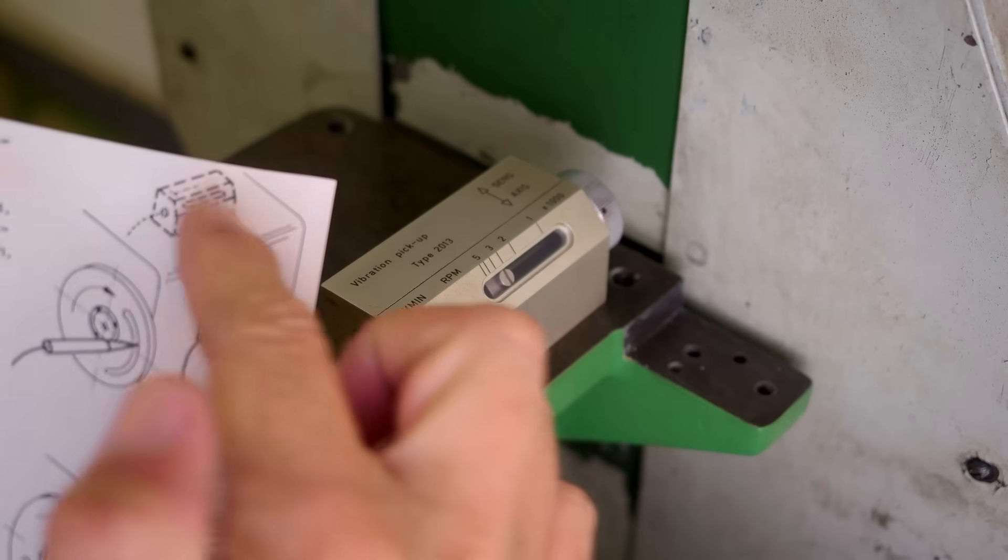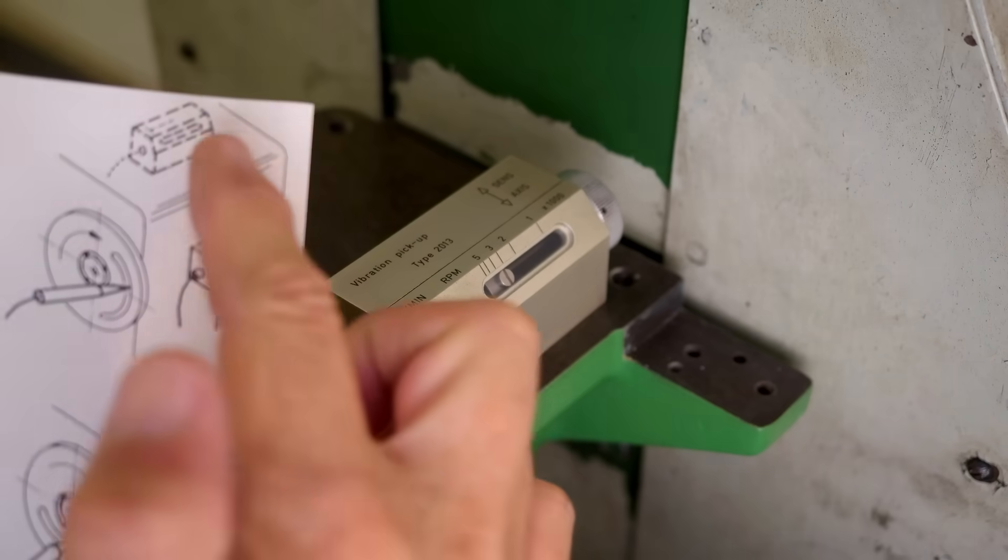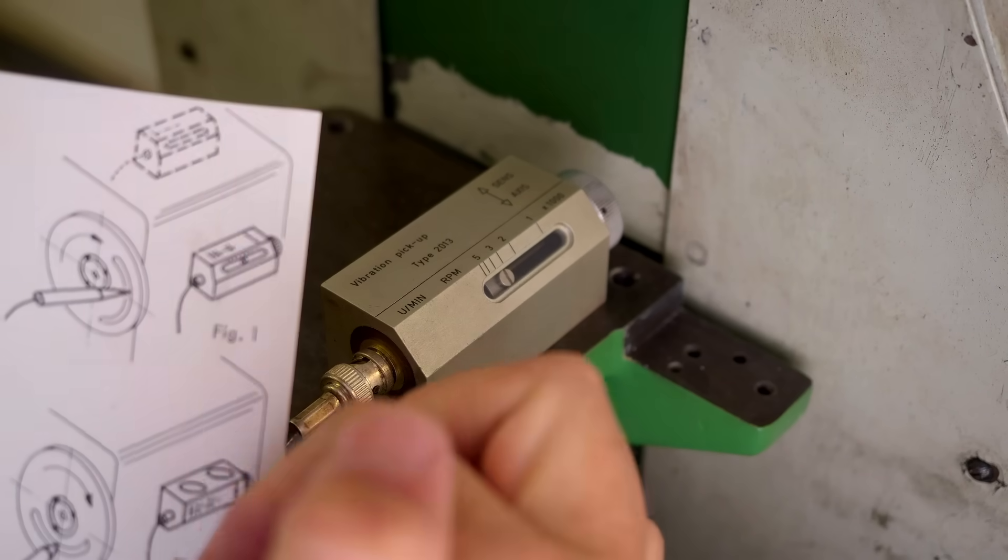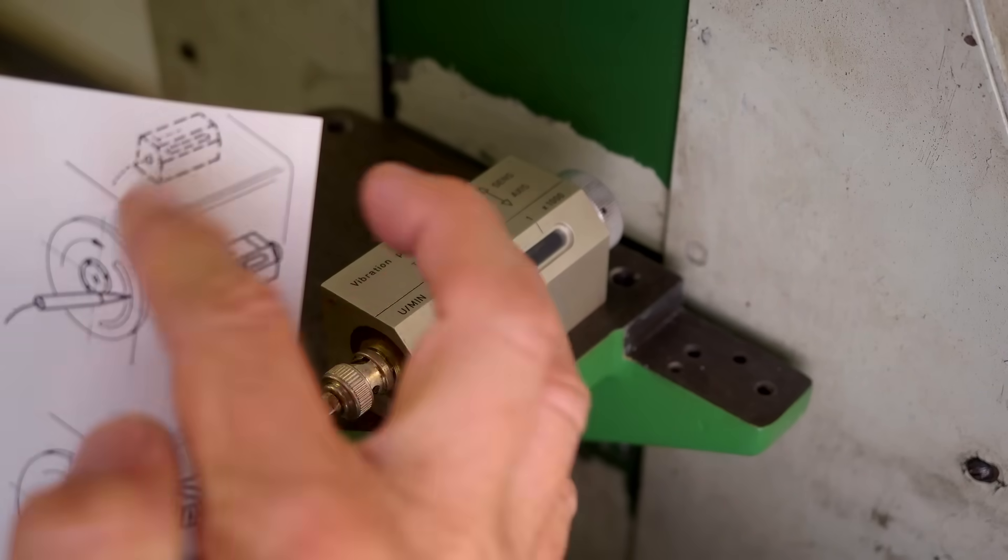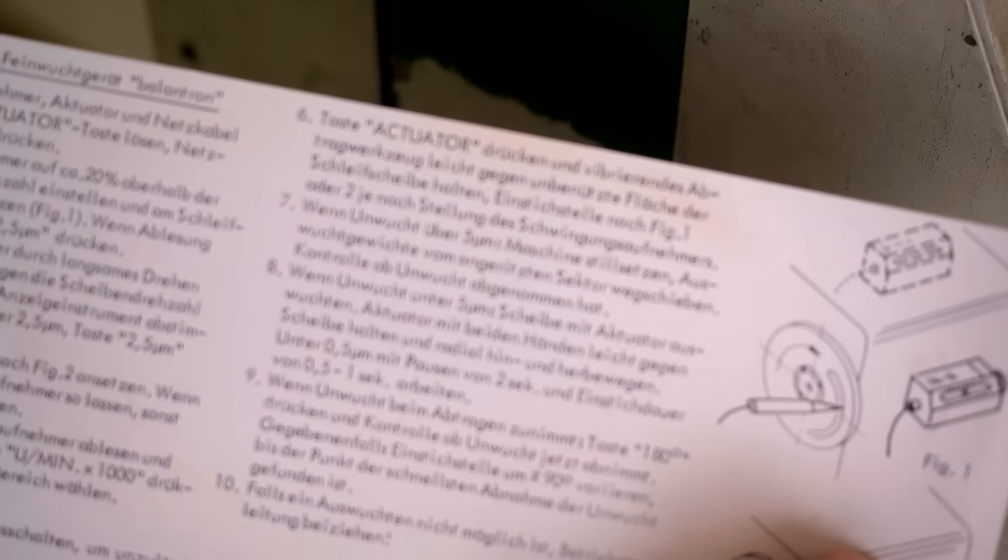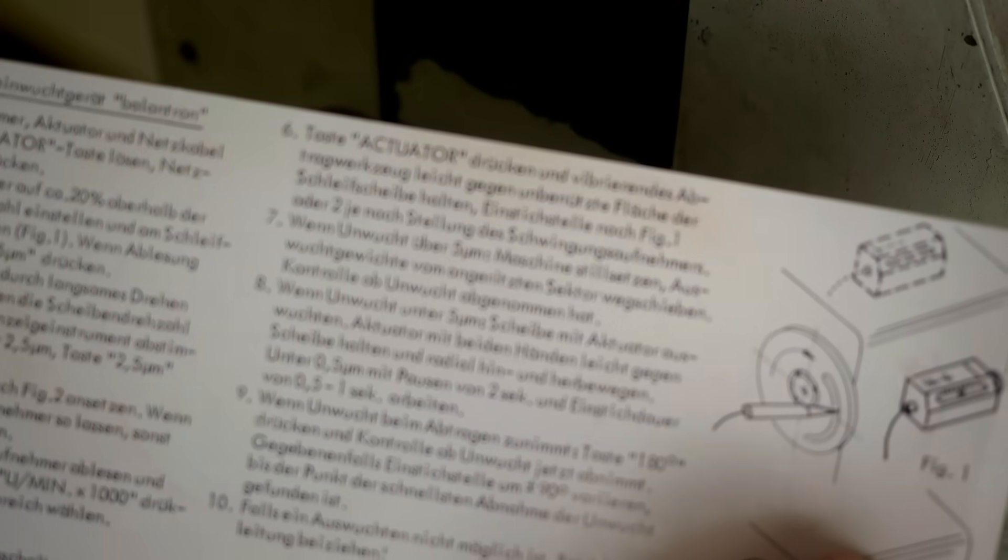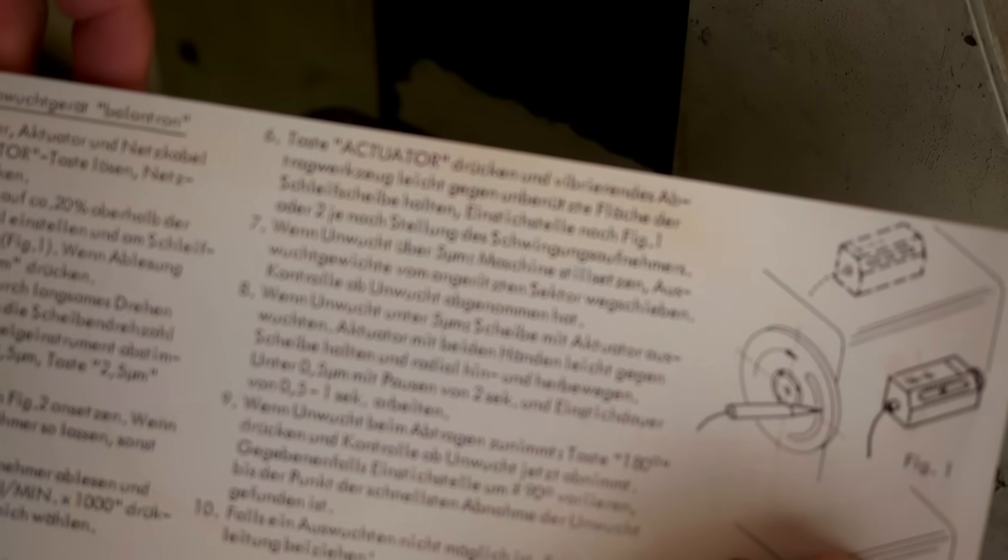By the way with regards to the accelerometer there were some comments that by putting it here on top of the spindle I was not really following what it's showing here because at least in the second one it shows it on the side but I don't think that's the correct understanding of this.